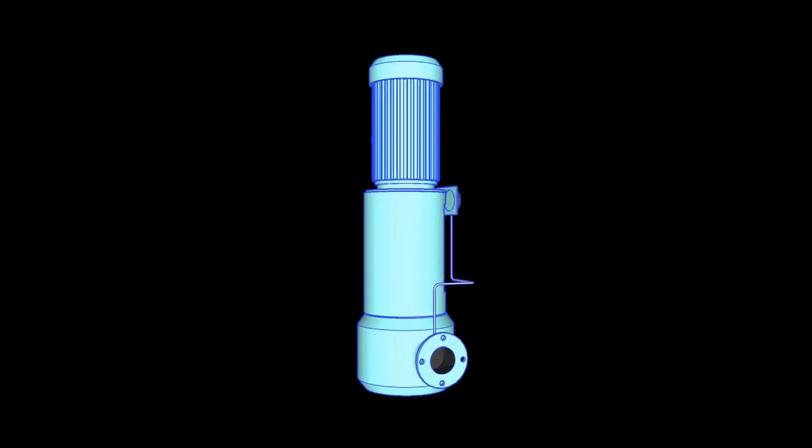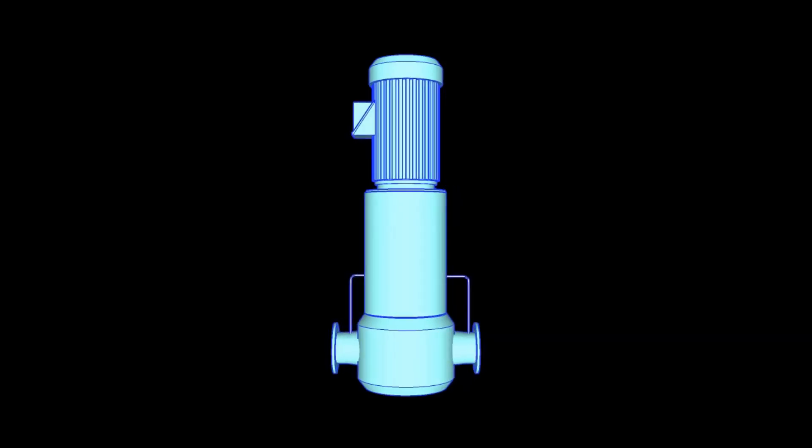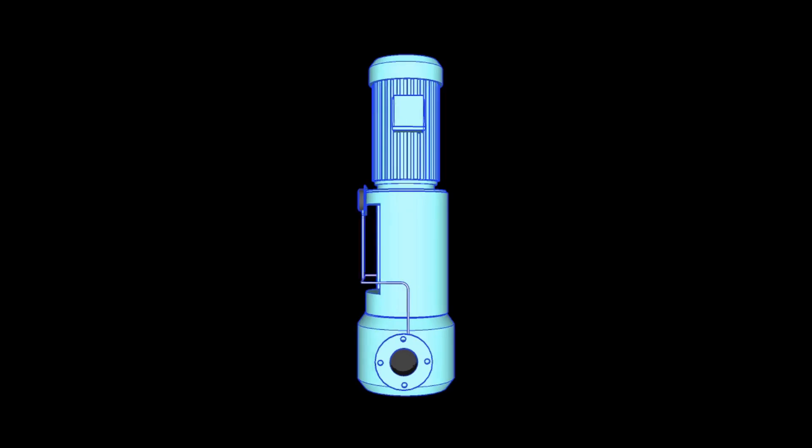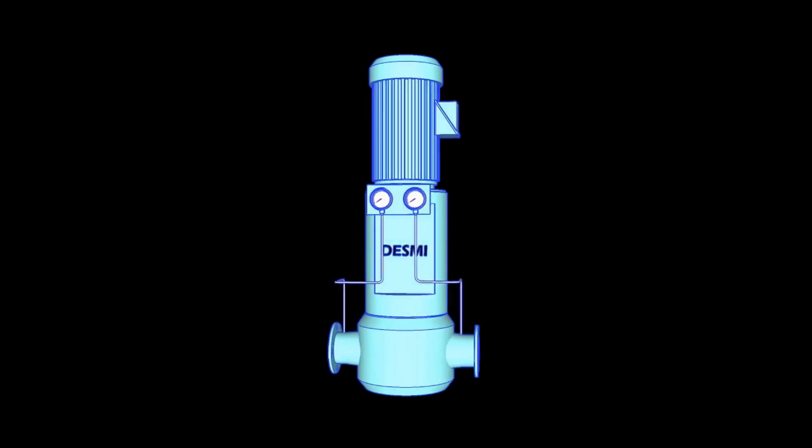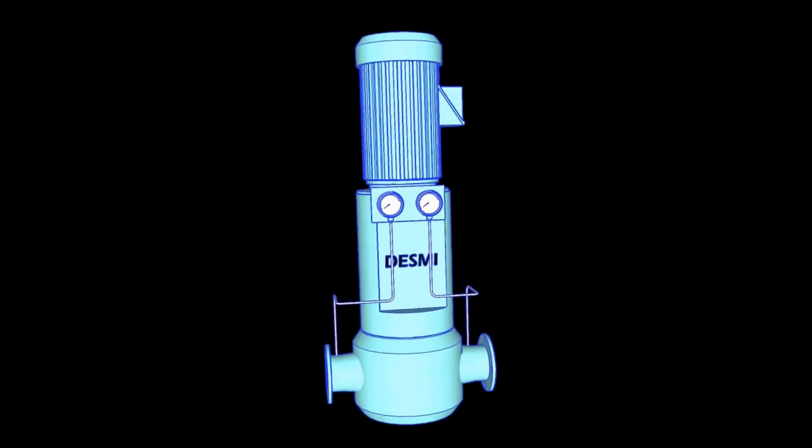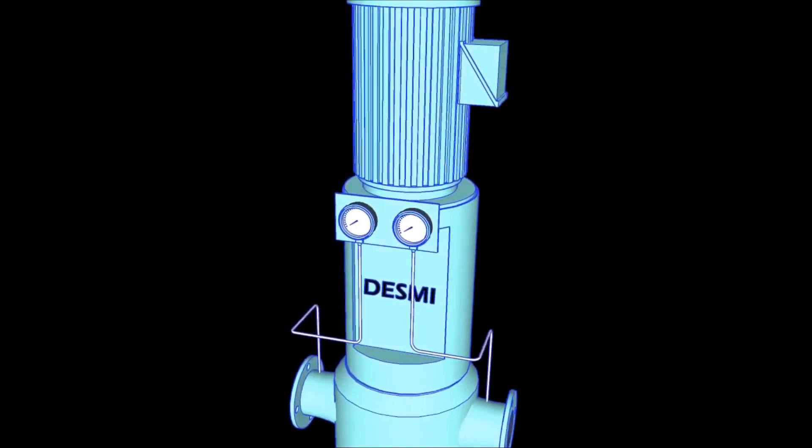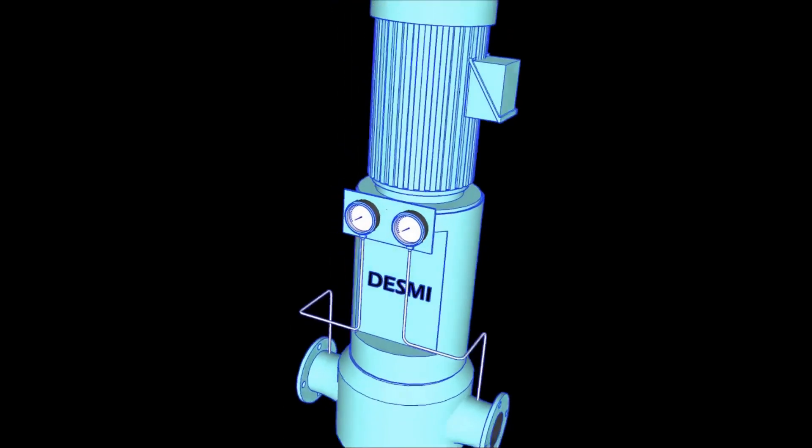The scrubber pump plays an important role in the system. It delivers variable amounts of sea water to the tower based on the system demand. For example, if the vessel is in emission controlled areas, the pumps supply additional volume to the system to clean the exhaust gas more effectively.